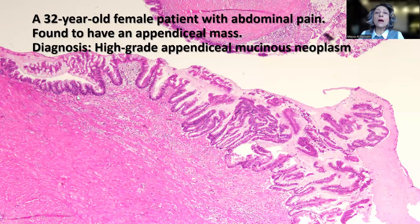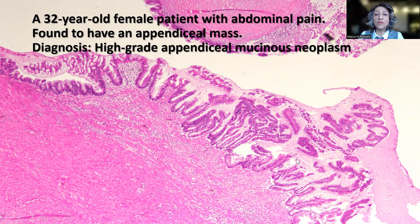To put it together, the final diagnosis in this case is high-grade appendiceal mucinous neoplasm, known as HAMN. Remember that you have to look for the surface villiform transformation, the nuclear features — which can be further supported by P53 staining — as well as the sub-epithelial sclerosis, the absence of lymphoid follicles, and the presence of linear calcification.